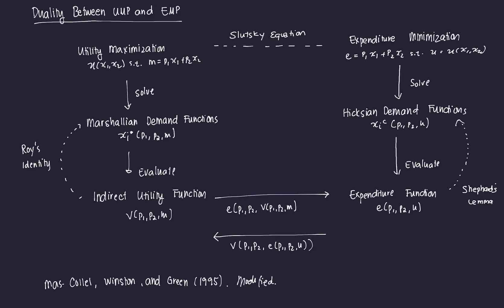For the videos that we've had so far, we've been discussing utility maximization. Utility maximization starts with an objective function, which is your direct utility function — a function of consumption of goods. That direct utility function is subject to some budget constraint or income constraint. If we solve the first order conditions of that constrained optimization process, we're going to get the Marshallian demand functions, which are the demand functions that typically give rise to the law of demand. These functions are functions of prices and income.